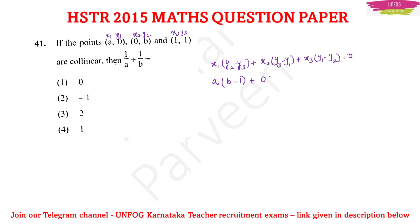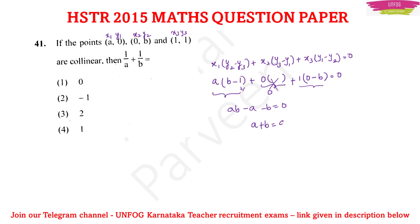Substituting: x1 = a, y2 = b, y3 = 1; x2 = 0 so that term vanishes; x3 = 1, y1 = 0, y2 = b. Setting equal to zero and simplifying: a(b − 1) + 1(0 − b) = 0, giving ab − a − b = 0, or a + b = ab.